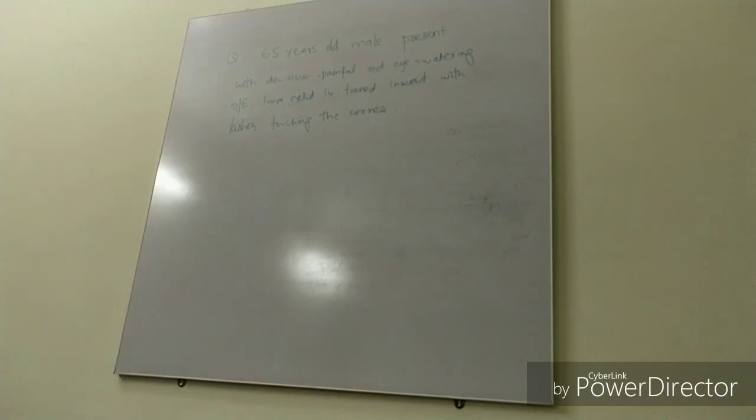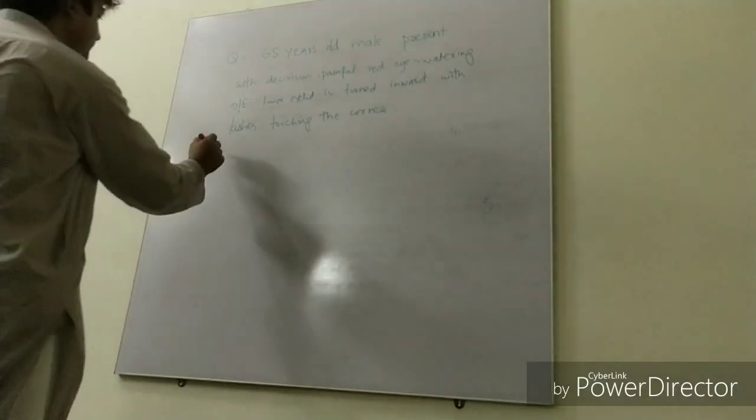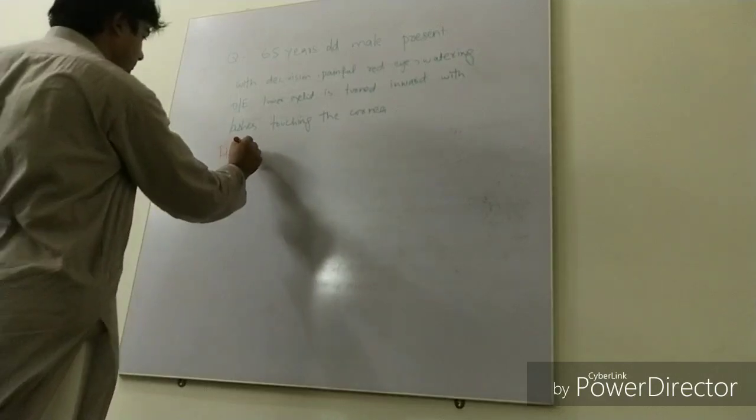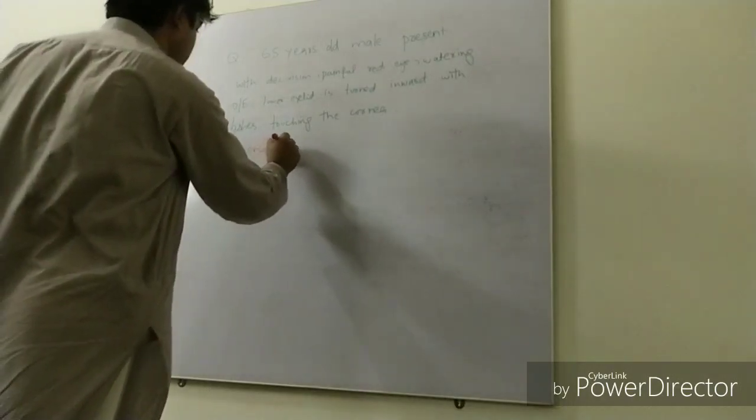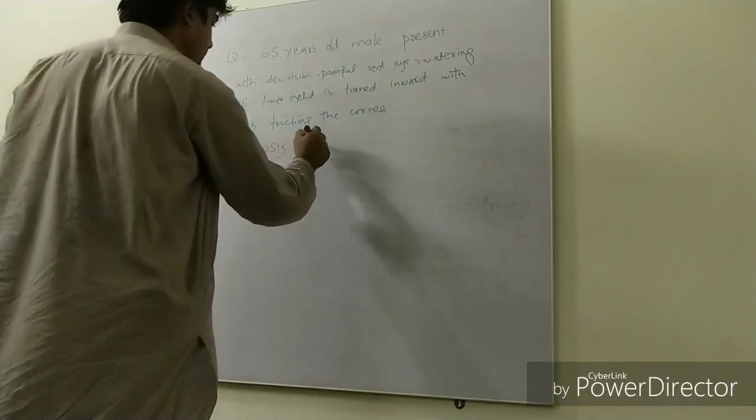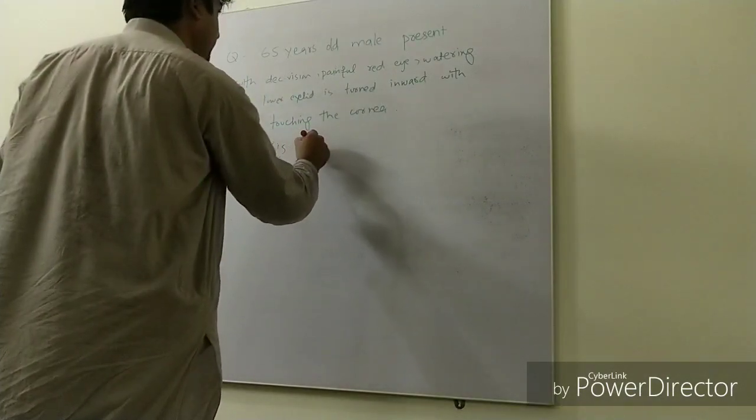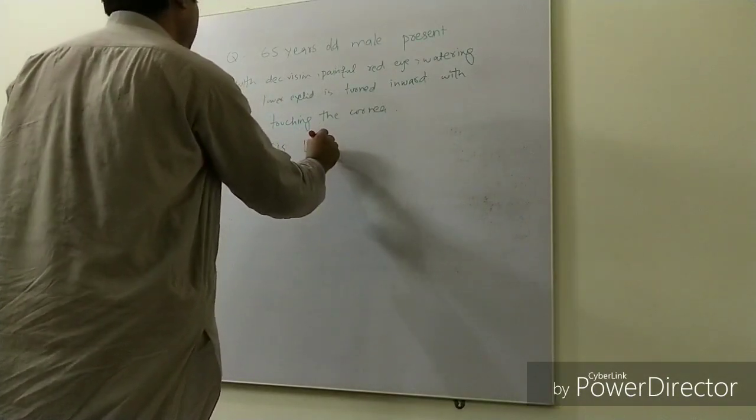That is also our today's topic. You can see a 65-year-old male presenting with decreased vision, painful red eye, watering, and on examination lower eyelid is turned inward and lashes are touching the cornea.